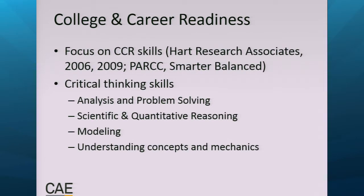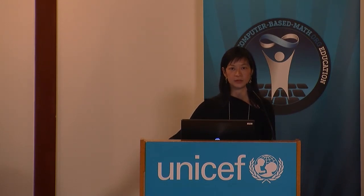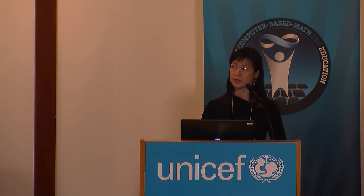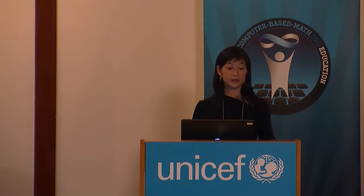One of the main things we look at are college and career readiness skills — critical thinking skills like analysis and problem solving, scientific and quantitative reasoning, modeling, and understanding the concepts and mechanics of math as opposed to just calculations. Hart Research Associates surveyed employers, who said critical thinking was among the top skills they want in employees. We also see this reflected in the two large assessment consortia from Race to the Top — PARCC and Smarter Balanced — which look for more holistic, higher-order thinking skills specifically in mathematics. At CAE, we believe we should learn math to become better critical thinkers with strong reasoning, analysis, and problem-solving skills, and to make everyday quantitative information — graphs, charts, infographics — comprehensible. These are the important skills needed for citizens of the 21st century.